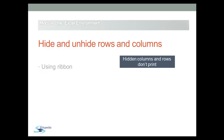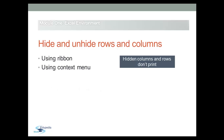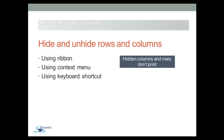As in all Microsoft programs, there is more than one way of achieving a task. You can hide and unhide columns and rows from the Cells group on the Home tab from the ribbon, and there are two other methods: either from the context menu when you right-click on the column or row headings, or using a keyboard shortcut to hide and unhide columns and rows.